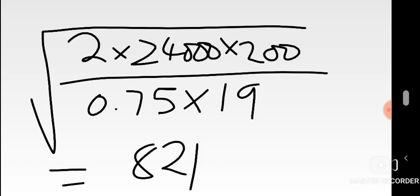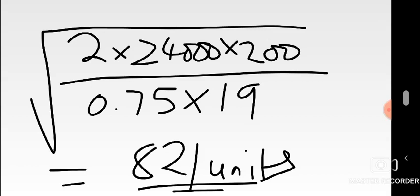Since the answer represents units, we always round off to the nearest whole number. You wouldn't say you have 3.2 units. So the EOQ at the lowest acquisition price is 821 units. Now we test for feasibility: does 821 fall within the range where the 19 kwacha price applies?